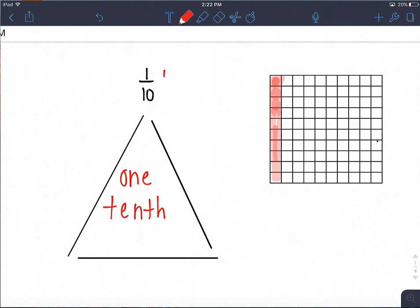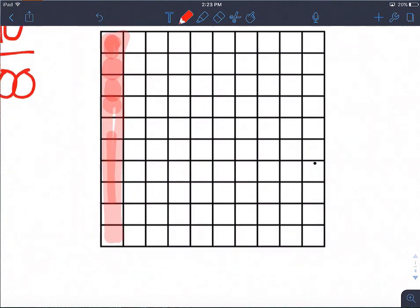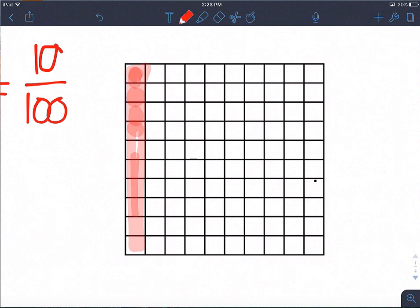I can also use my giant one to get my fraction to be out of one hundred, because we're thinking about the 100% block, and that's going to help us get our percent. So I know that ten times ten is one hundred. And if I multiply the denominator, I also need to multiply the numerator by ten. And one times ten is ten, which is exactly what I shaded over there. So if you think about this as our 100% block, this is really every single little box inside of that 100% block is equal to 1%.